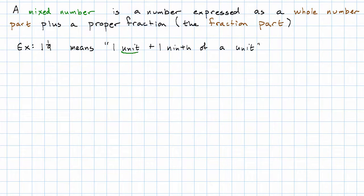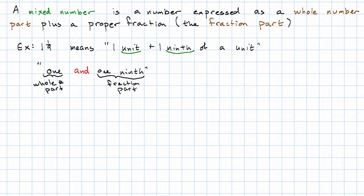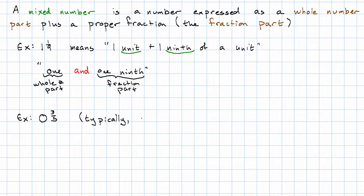For example, the mixed number we saw earlier, one and one-ninth, means one unit plus one-ninth of a unit. Notice the nouns here — unit and ninth — are different, so we can't just add the one plus the one. One and one-ninth is one plus an additional ninth. We read this number as "one" then the word "and" then "one-ninth" — this is the name of the whole number part and this is the name of the fraction part. Now, what if there is no whole number part? What if we want to describe a proper fraction? Well, the whole number part could be zero — we could write zero and three-fifths, though typically we'll just write three-fifths.